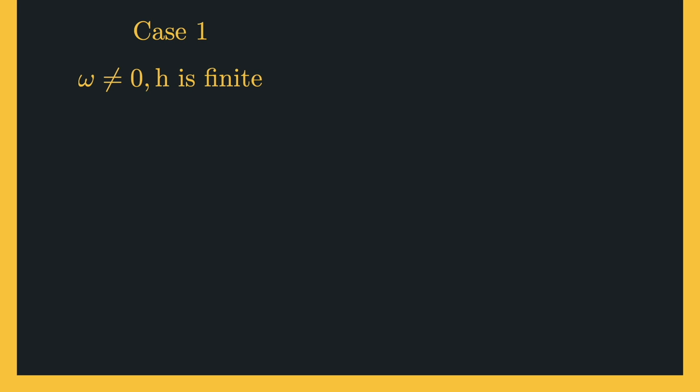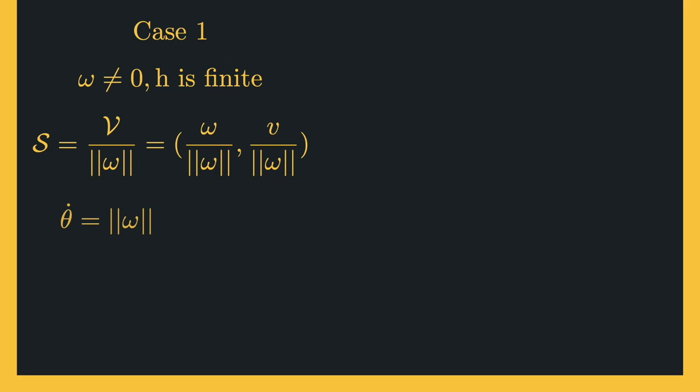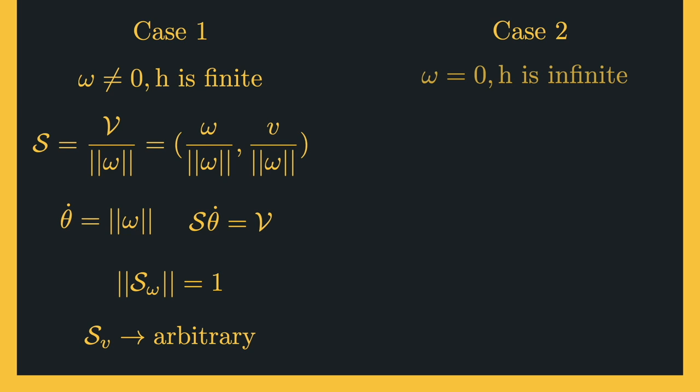As before, we have two cases. Case one is when there is a rotational component, so the angular velocity is not zero and pitch h is finite. The angular component of the screw axis is non-zero and the twist is normalized by the norm of the angular velocity vector. Theta-dot is the angular speed about the screw axis such that screw axis times theta-dot equals the twist. The norm of the angular component is 1 because we normalized it with the angular speed, while the linear component is arbitrary with no constraints.